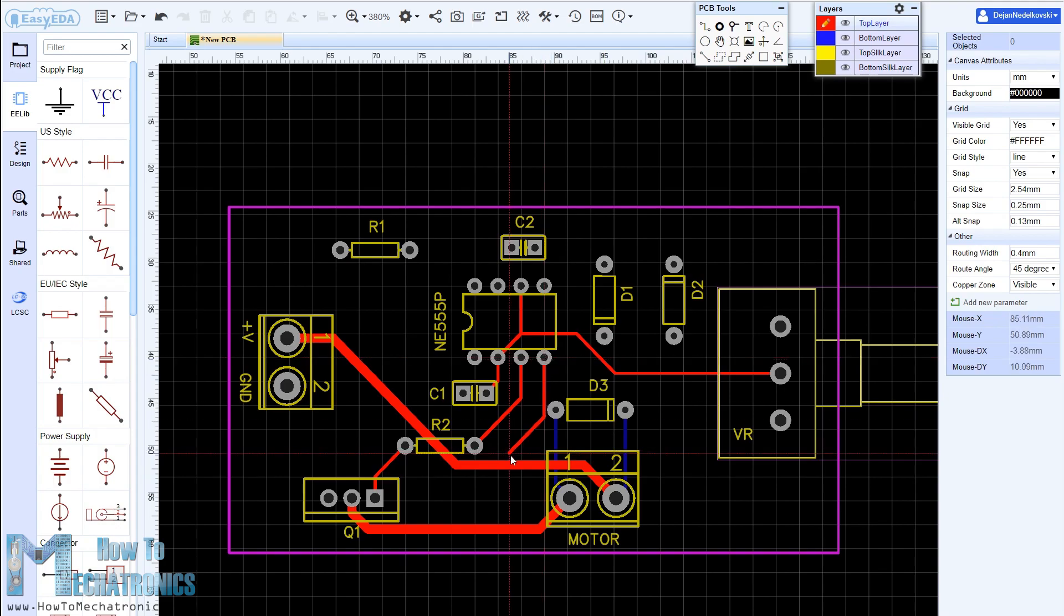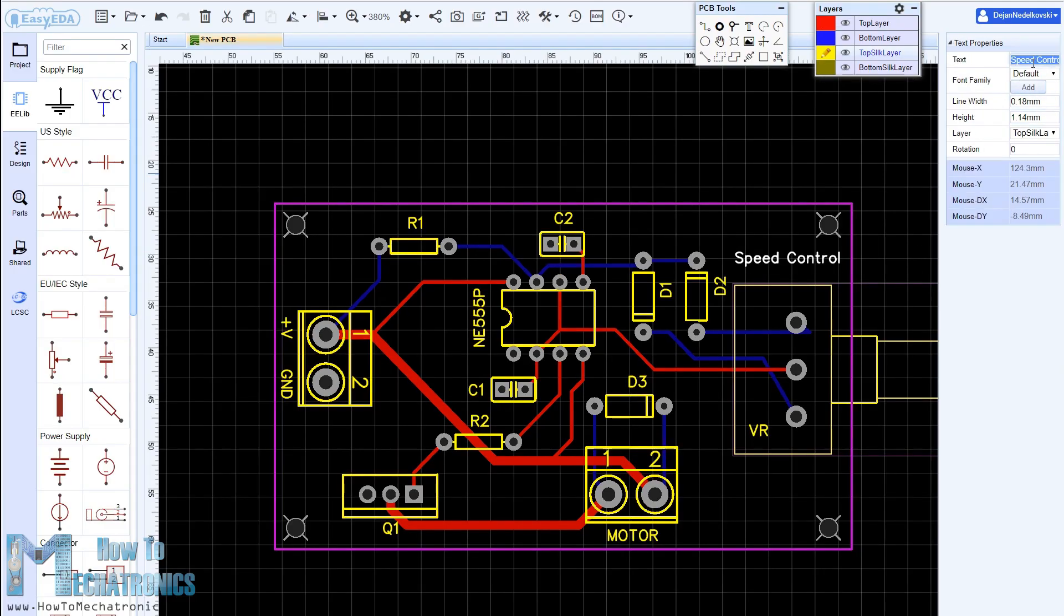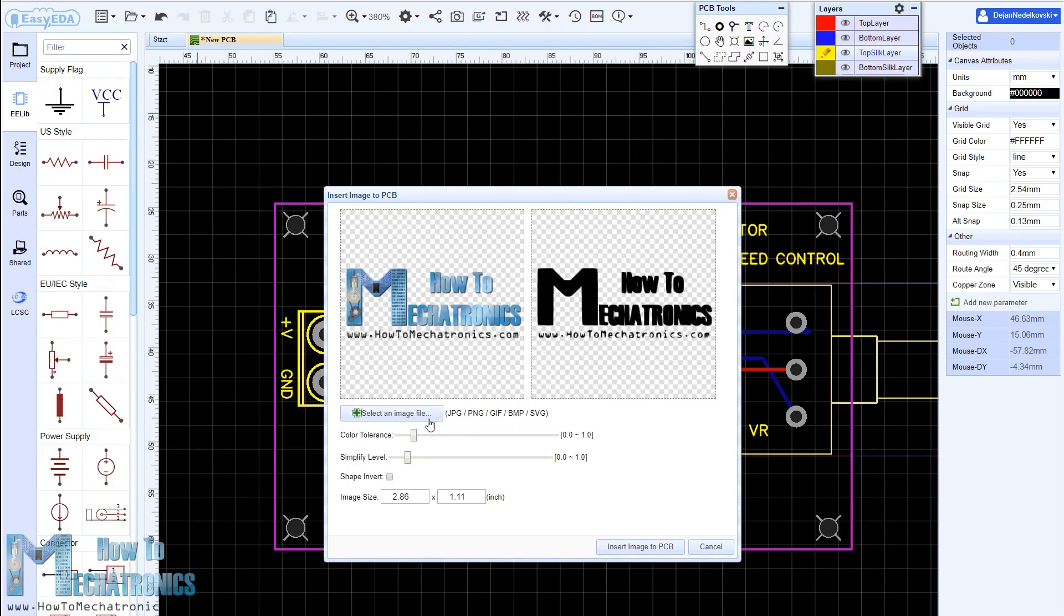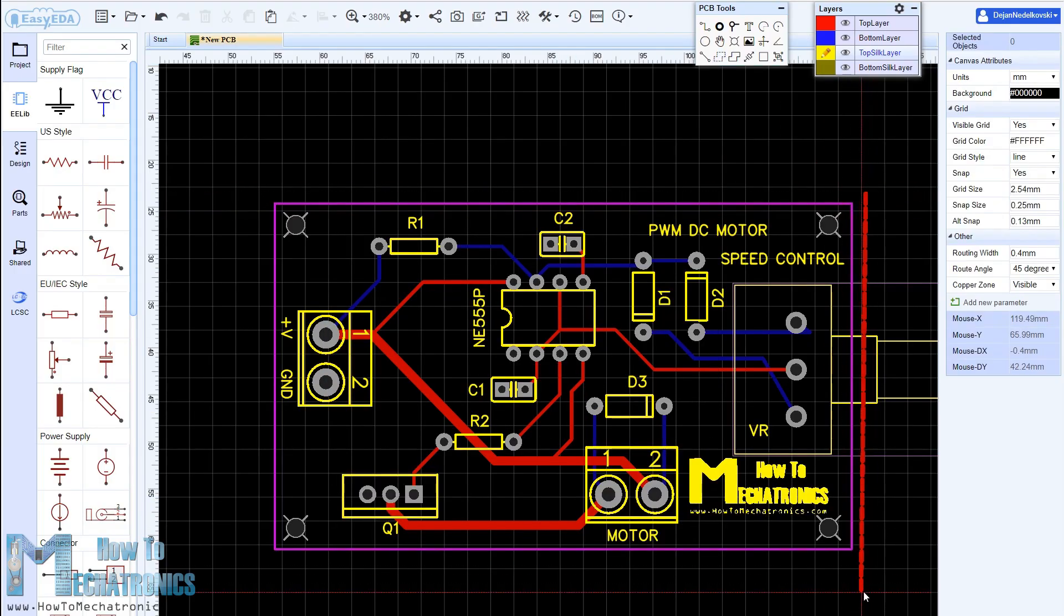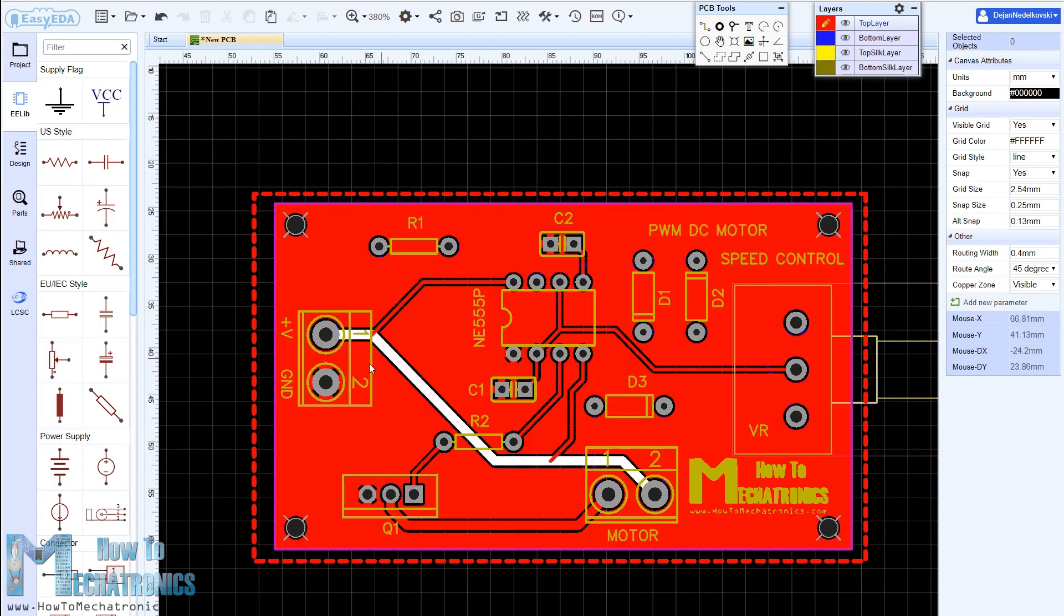The pads of the components that need to be connected to ground are set to ground through the pad properties tab, where we need to type GND into the net label when the pad is selected. We can use the silk layer to add text to the board. Also we are able to insert an image file, so I added an image of my website logo to be printed on the board. At the end, using the copper area tool we need to create the ground area of the PCB.